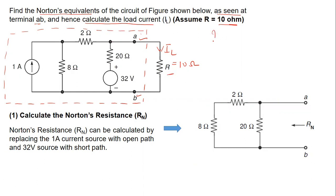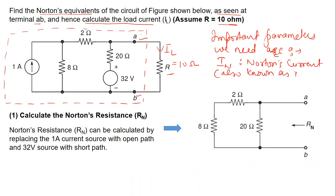These parameters are, so important parameters we need. So they are Norton's current, IN. Norton's current, also known as short-circuit current, and then we need RN which is Norton's resistance.